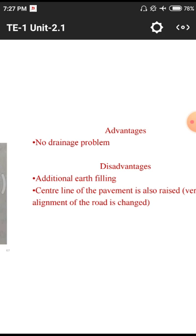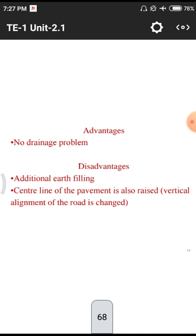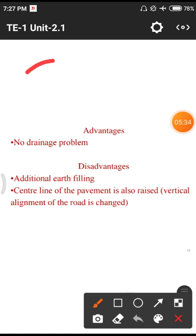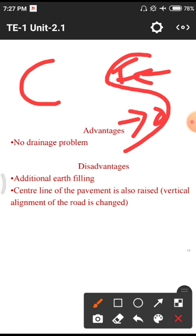Another disadvantage is that the central line of the pavement is also raised and the vertical alignment of the road changes. In C-curves, only one type of raising is used — inner edge is constant, outer edge is raised. But in S-curves, on one side the inner edge is raised and on the other side the outer edge is raised, so different kinds of raising occur and the vertical alignment changes accordingly.